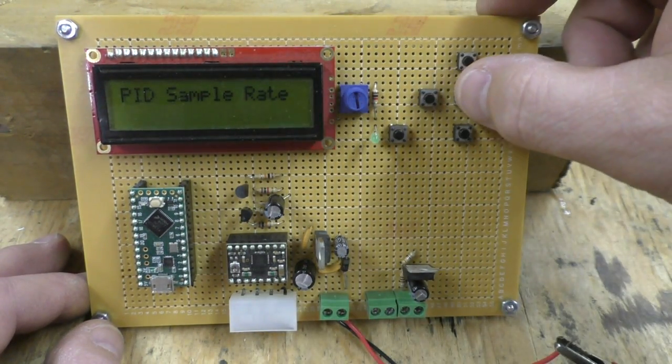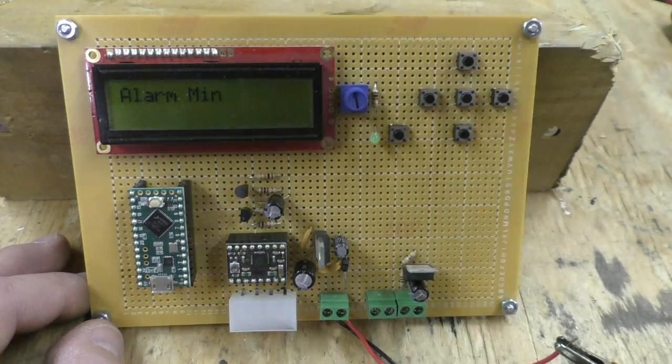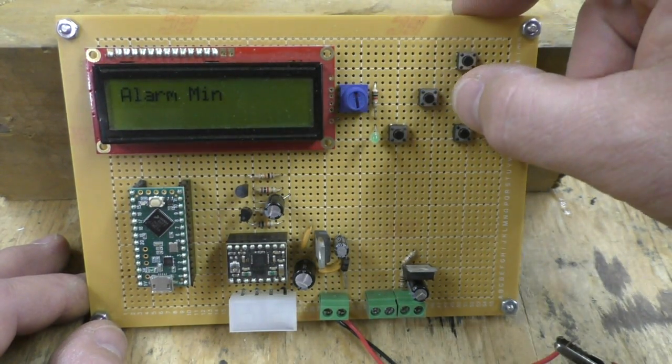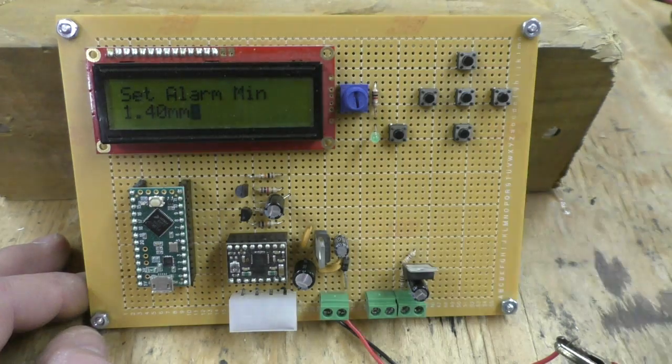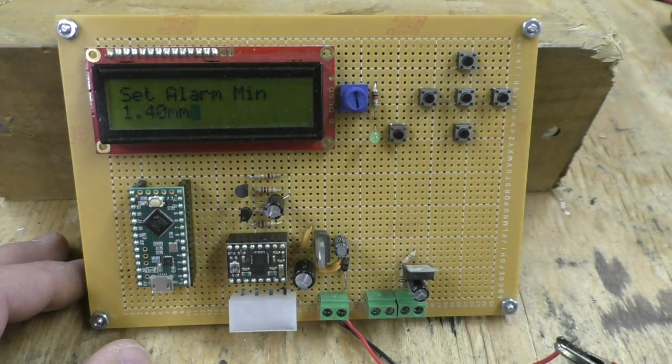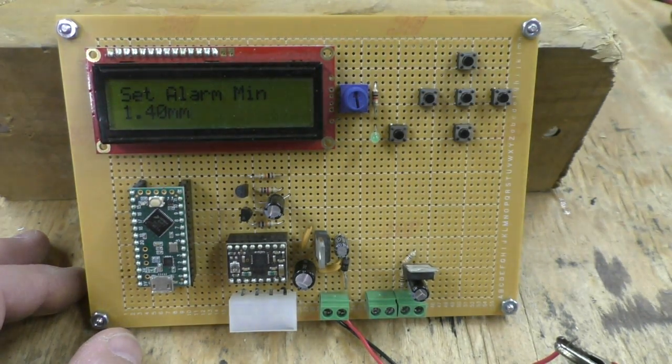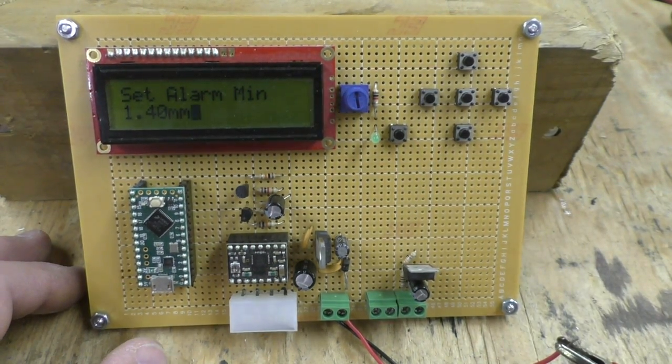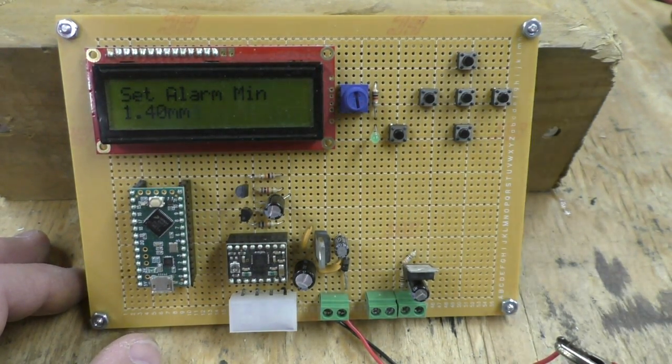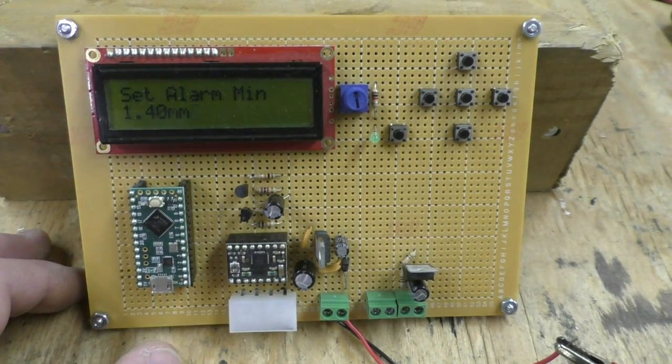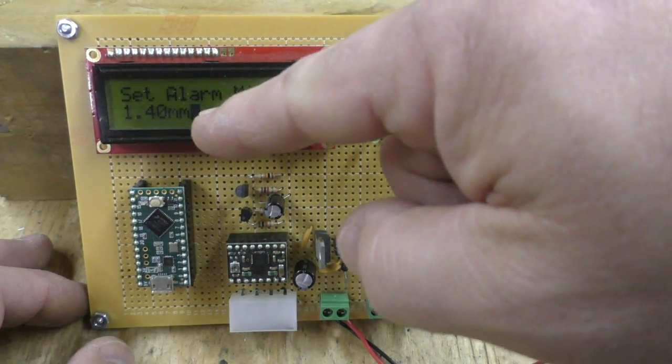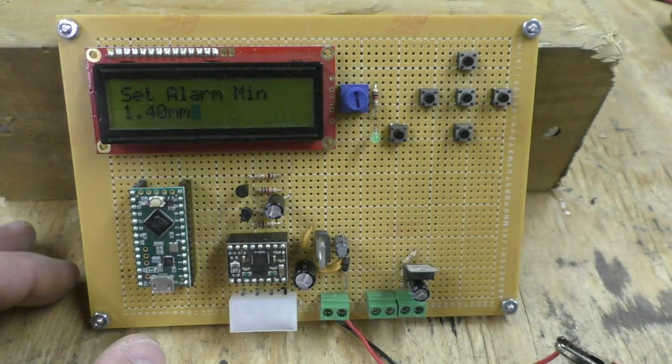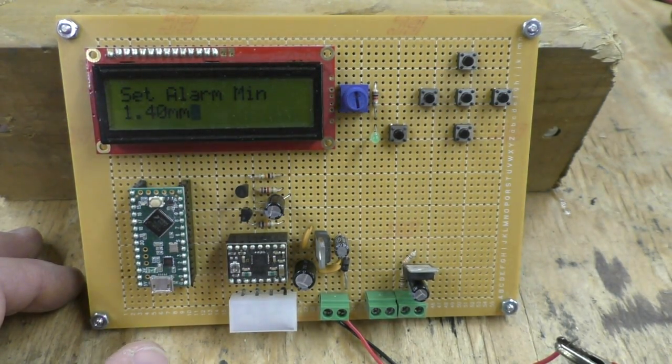The alarm—this sets a minimum and a maximum size of your filament. If you're looking for 1.75 millimeter filament and 1.8 is too high and 1.65 is too low, then you can set these.